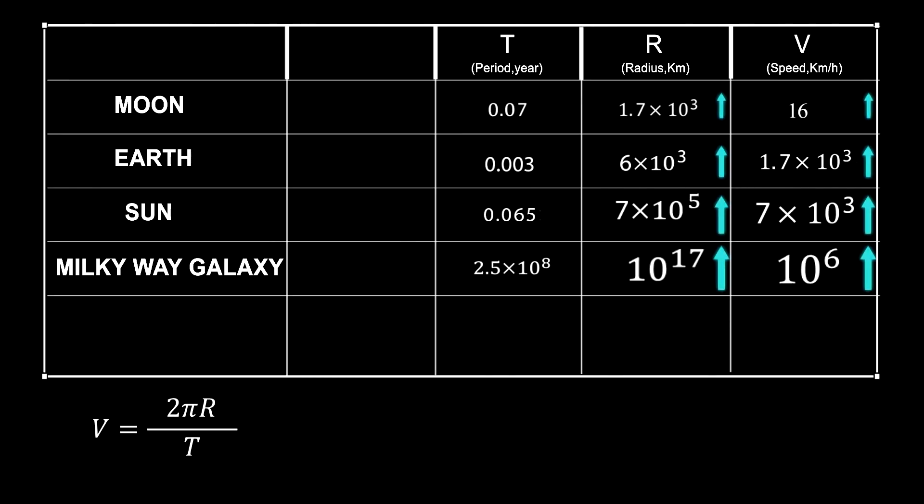This table leads us to two important points. The more the radius increases, the more the speed increases. Second, the rotation period of celestial objects is much shorter than their lifetime.